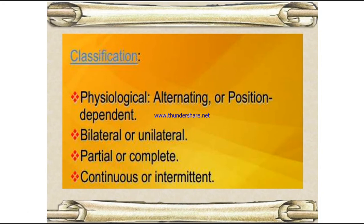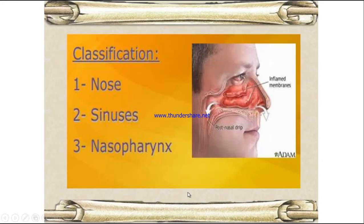Next, it can be partial or complete, and that is continuous or intermittent. Another classification is by location: obstruction in the nose, obstruction in the sinuses, and the nasal valley. Any obstruction in these areas we can consider as nasal obstruction.